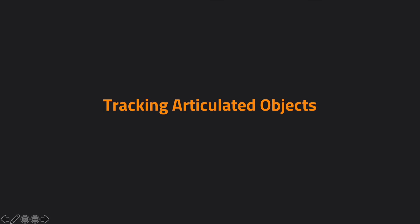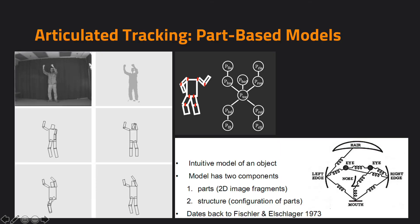We have spent a lot of time on tracking a template or tracking a target object represented by a bounding box. Now let's talk about how we can track articulated objects. Traditionally, we can build part-based models to represent articulated objects. There are a lot of objects that can articulate in the world, but for us probably the most applicable model is the motion model for human parts.